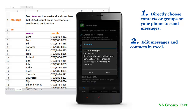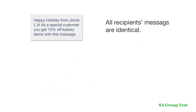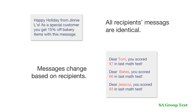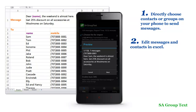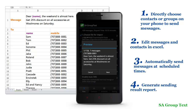Which means you can not only send group messages where all recipients' messages are identical, but also messages that change based on recipients. The third feature is that you can set times for sending. This app can automatically send messages at the set times. And you will get a sending result report showing which are sent successfully and which have failed.